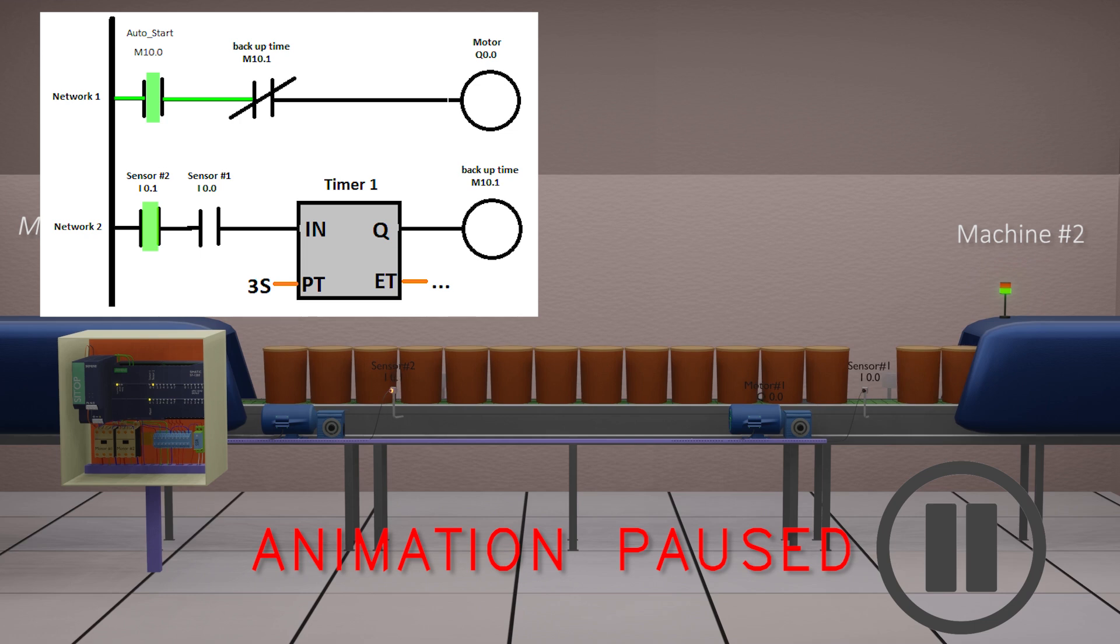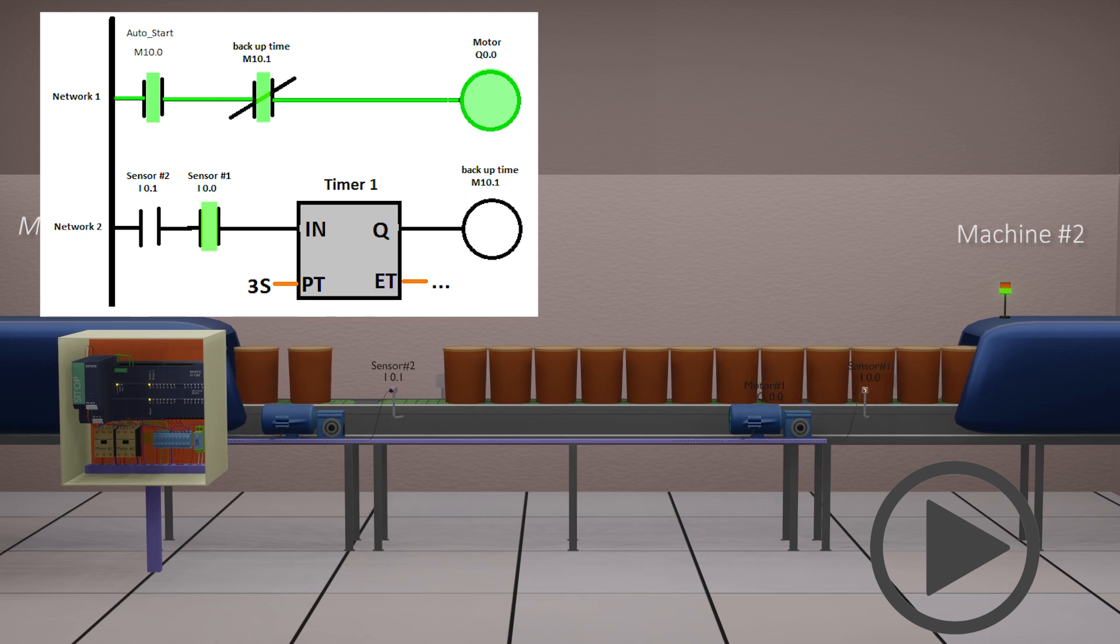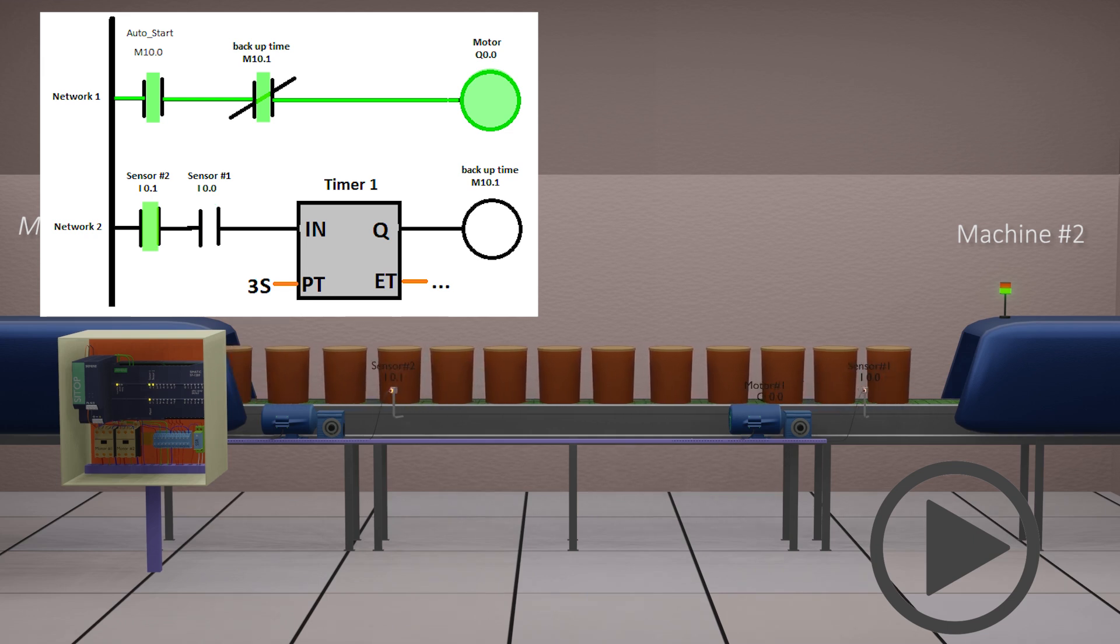The backup timer bit in network 1 closes again, and this will restart the conveyor motor Q 0.0. This conveyor restarts and starts moving the buckets towards the machine inlet conveyor. This cycle of stopping and restarting the conveyor belt will continue until the auto bit is off.